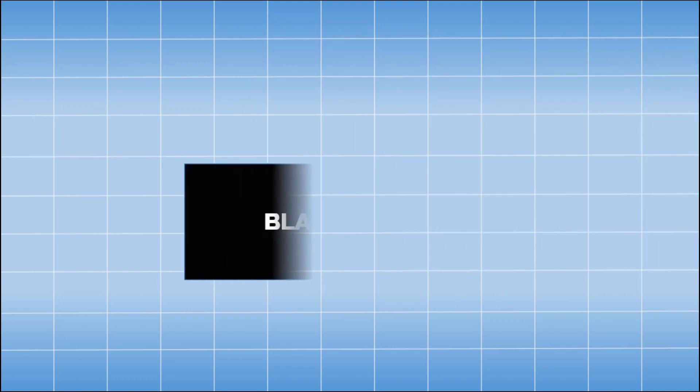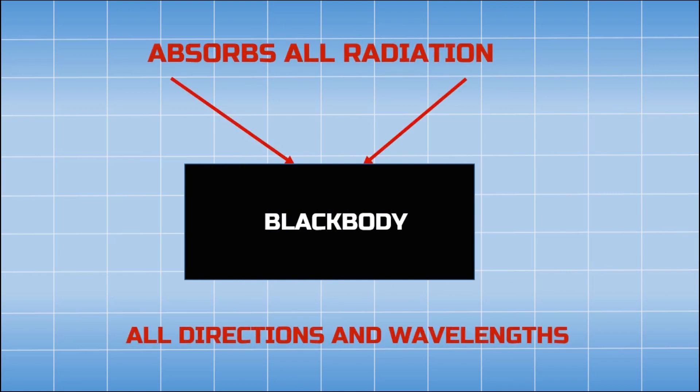Black body is a body that completely absorbs all the radiation incident on it from all directions and at all wavelengths without any reflection. That's why it is known as a perfect absorber.